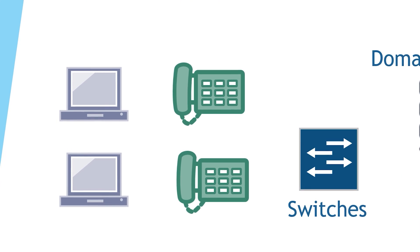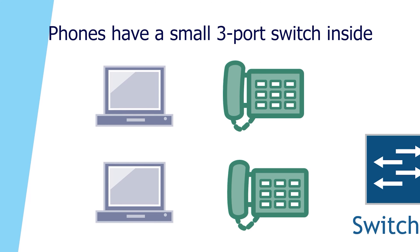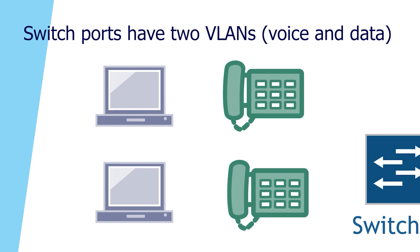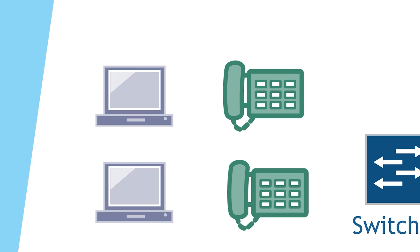If you're planning out a voice network, you might think that adding phones will double the number of switch ports you need — one for the PC and one for the phone. Fortunately, no. Desk phones have a small three-port switch inside them: one port connects to the upstream switch, the second is internal and connects to the phone hardware, and the third port is for the PC to connect to. This means you still only need one switch port per desk. And this doesn't mean we're mixing regular data with voice traffic — the upstream switch port is configured with two VLANs: one is the voice VLAN and the other is the regular data VLAN that the PC connects to.